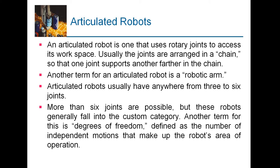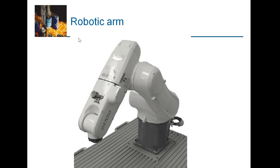More than six joints are possible, but these robots generally fall into the custom category. Another term for defining a robot is degree of freedom, defined as the number of independent motions that make up the robotic area of operation.